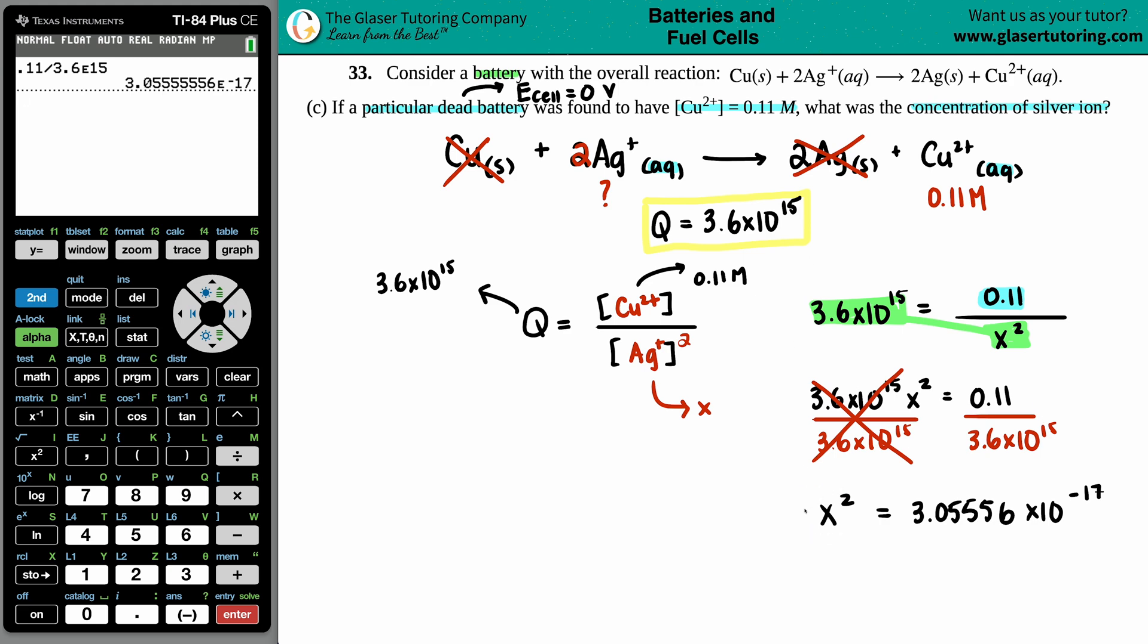And now we just want to solve for X. So square root the information. Square root and the square cancel out. And now we have X equals square root of this number. And there you go. I guess we'll do two sig figs. So 5.5, 5.5 times 10 to the negative ninth. And that's in molarity.